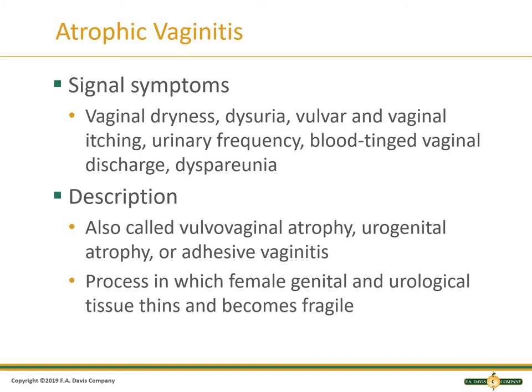Symptoms include vaginal dryness, dysuria, vulvar and vaginal itching, urinary frequency, vaginal discharge, and dyspareunia, which is painful sex. We look at these with vaginitis, and we understand that female genitals can be very inflamed, very tender. The tissue thins and becomes fragile as they get older. This contributes to atrophic vaginitis.